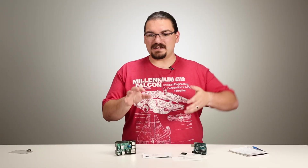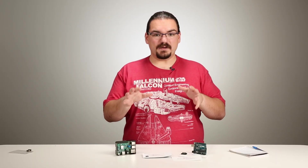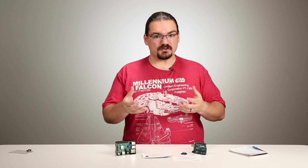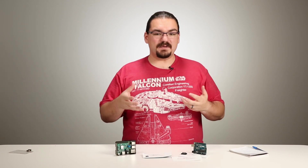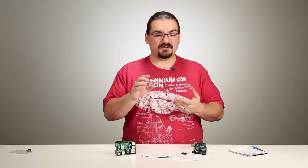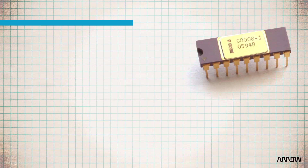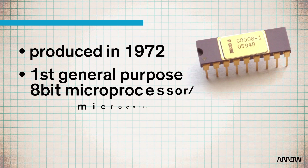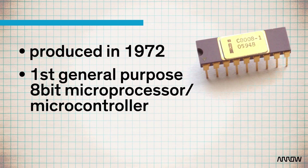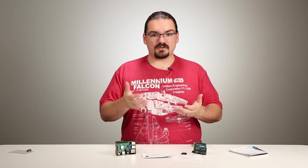Some of the history about 8-bit, 16-bit, and 32-bit microprocessors: the first 8-bit microprocessor I really know of is the Intel 8008. It was produced in 1972, and it was the first general-purpose 8-bit microprocessor.